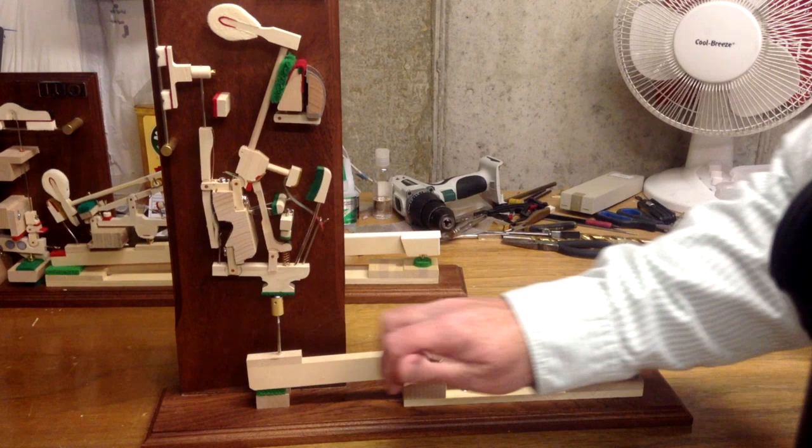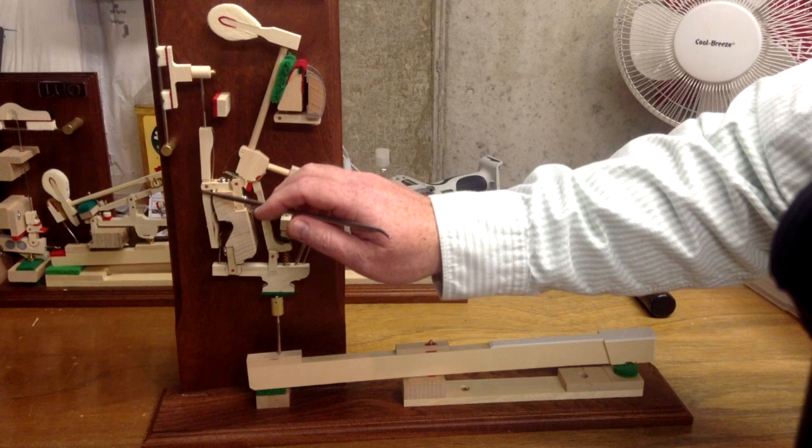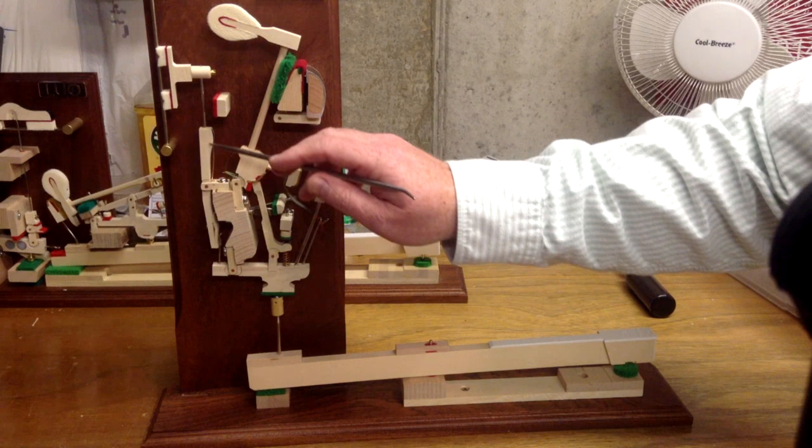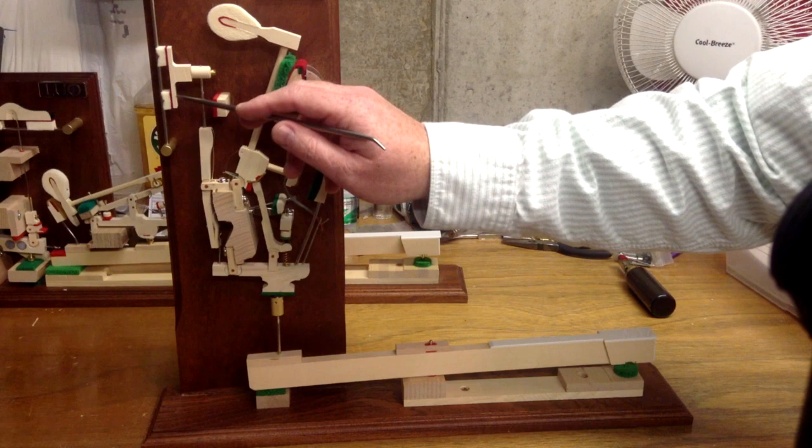This piece right here is the damper lever. This is the damper lever flange. This is the damper wire, I guess you can call that, and then the damper head. Then of course, these are the damper felts. All that is the damper assembly.